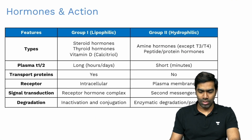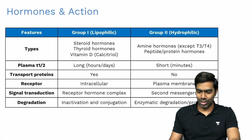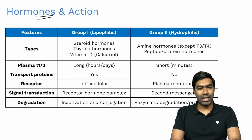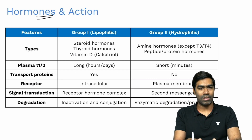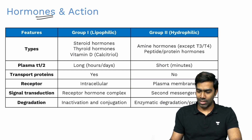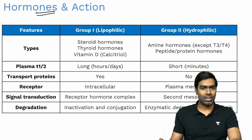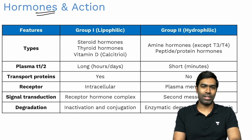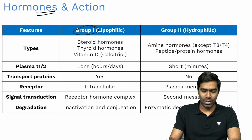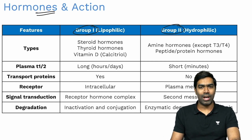First, let's talk about hormones and their action. Hormones are substances that are secreted at one place and are carried predominantly by blood to a different place where they exert their action. There are different classification systems, but the most useful one divides hormones into Group 1: lipophilic hormones, and Group 2: hydrophilic hormones.